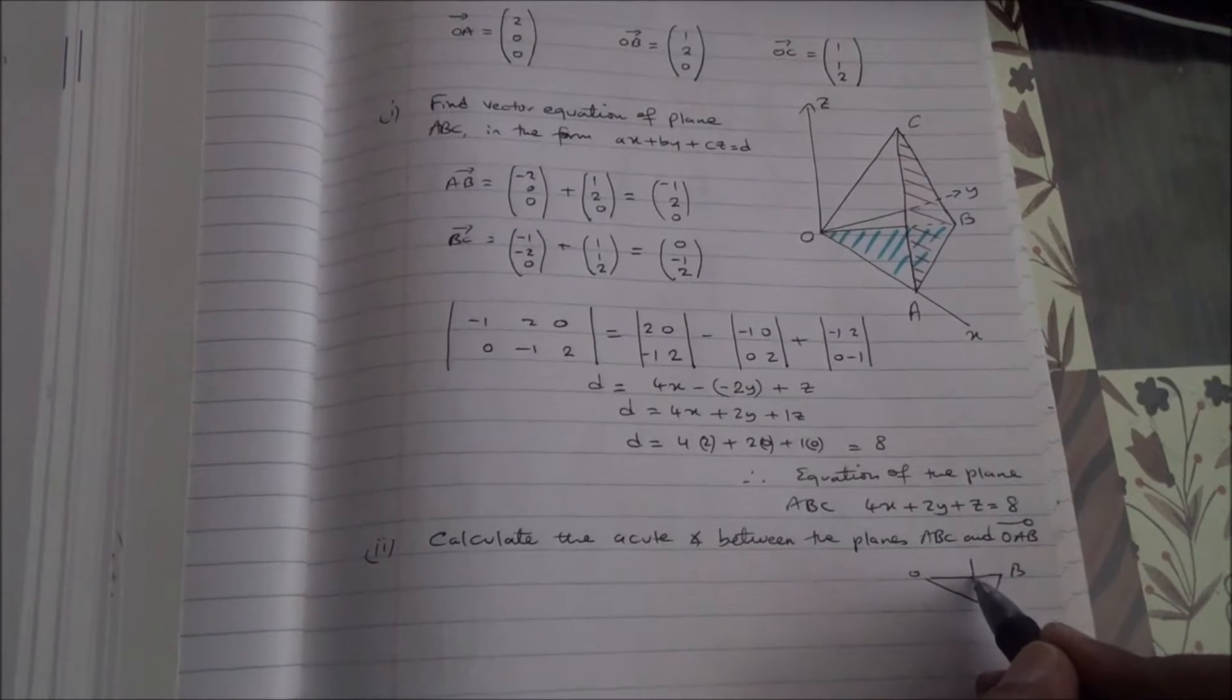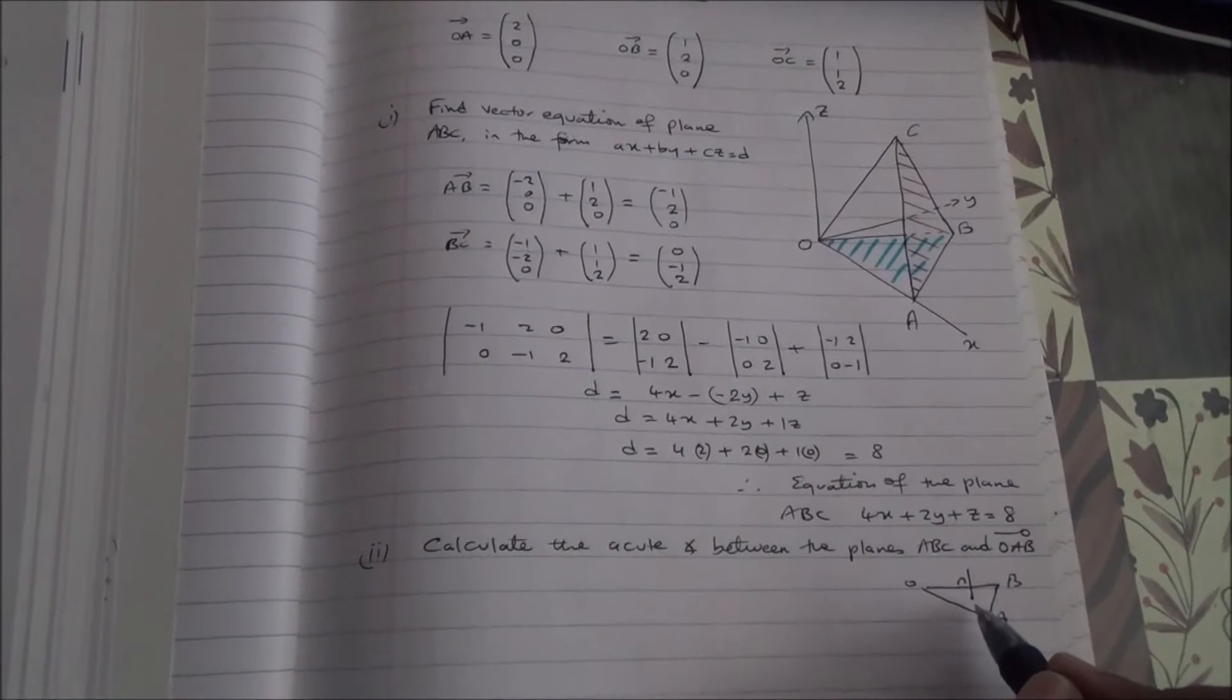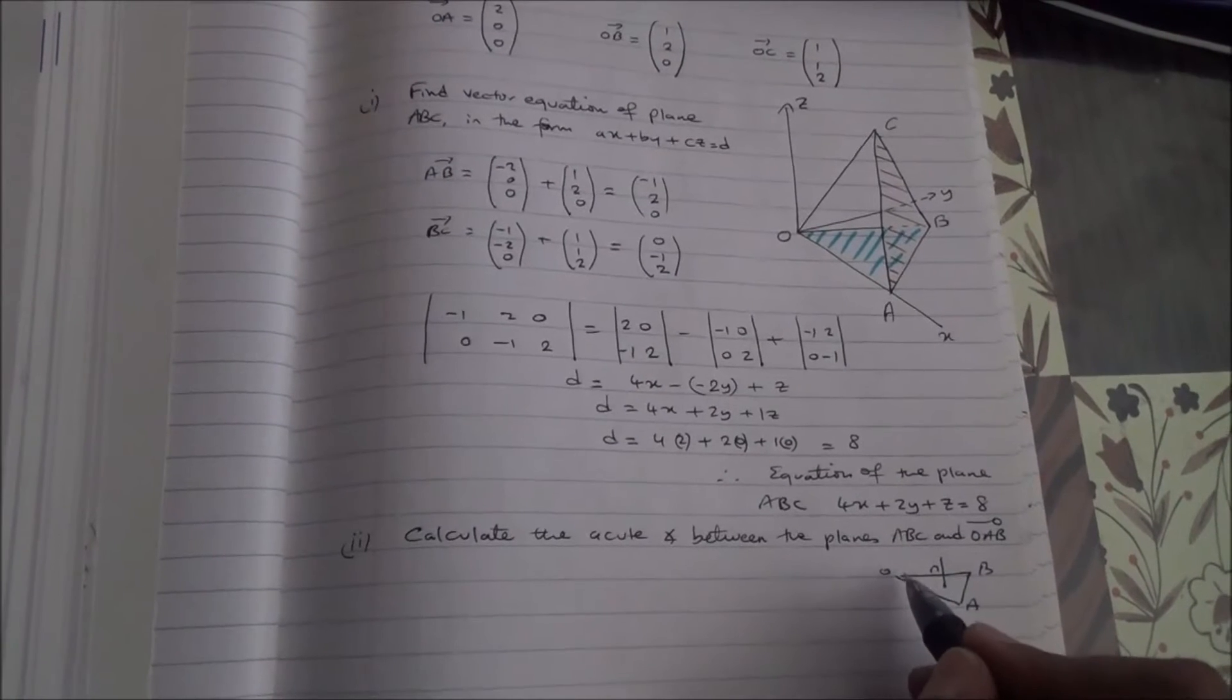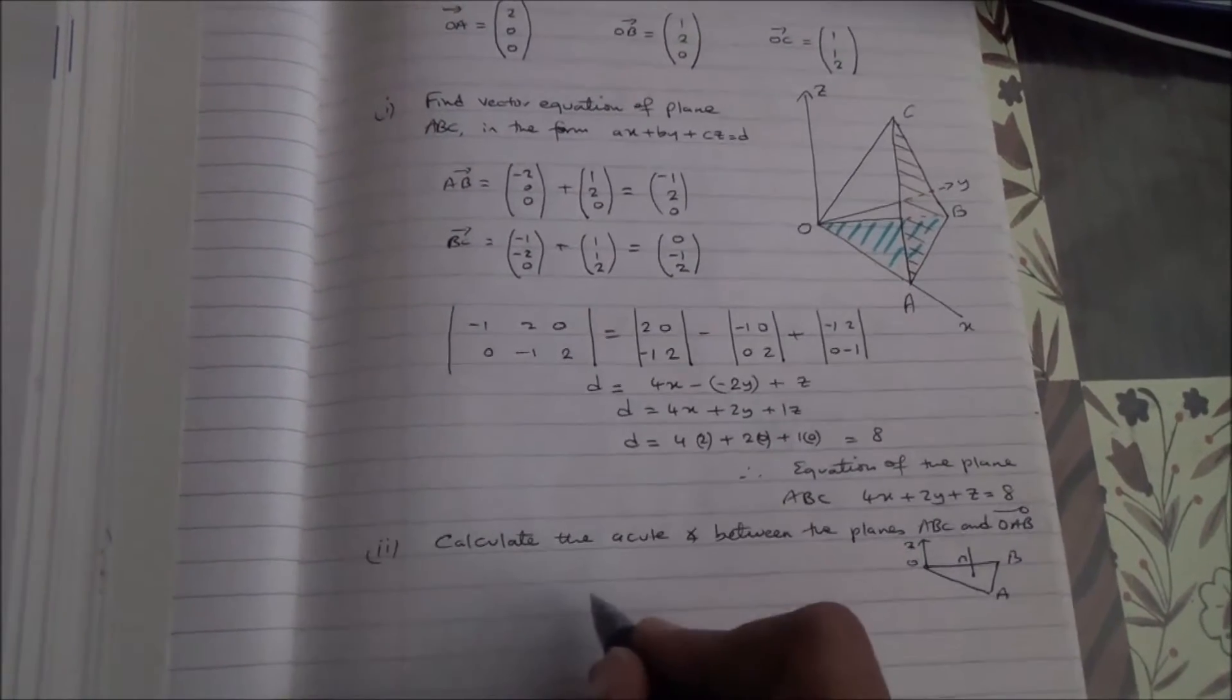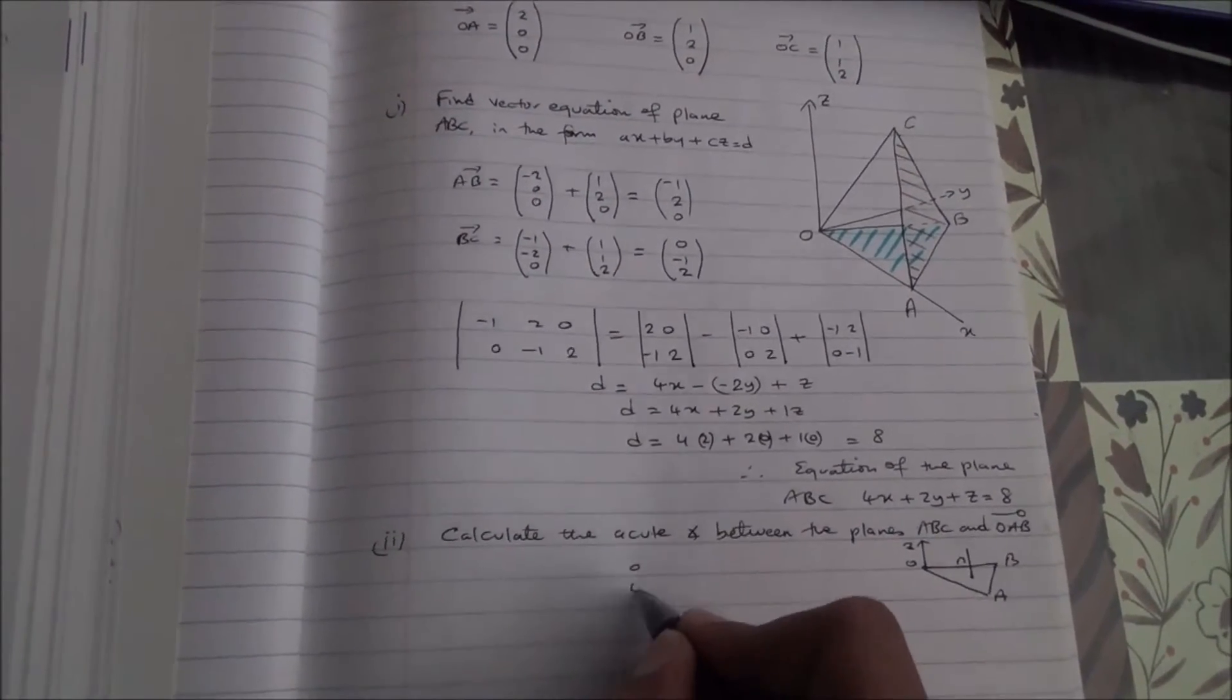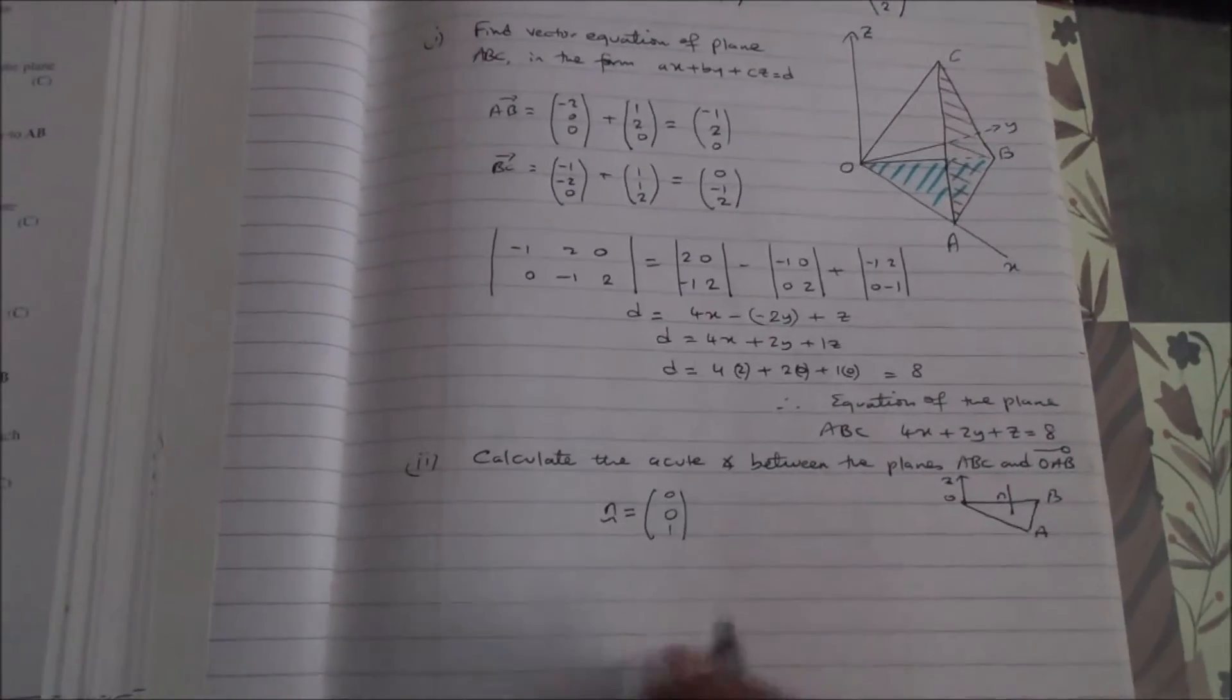So, a normal vector to the plane will be here. Any points on the plane here is having 0, as their z coordinate. So, we can write, this is the z axis. So, a normal to the plane OAB is going to be 0, 0, 1. That's a normal to the plane OAB.